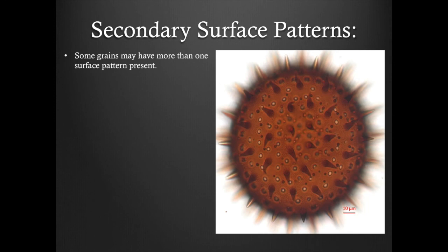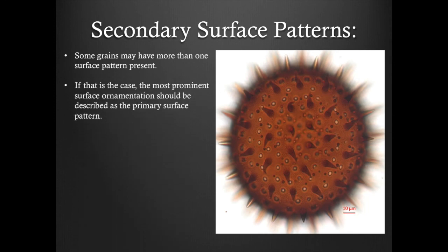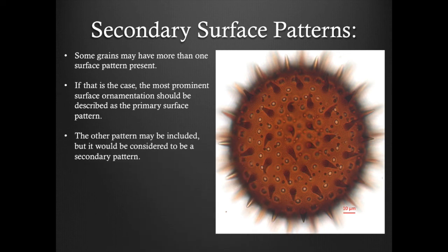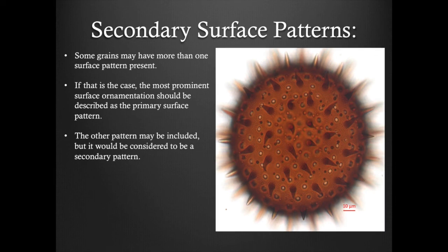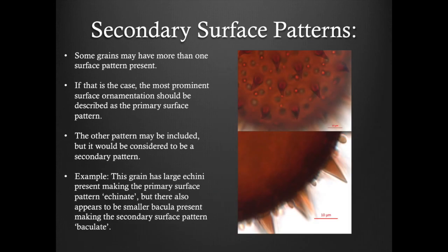Some grains may have more than one surface pattern present. If that is the case, the most prominent surface ornamentation should be described as the primary surface pattern. The other pattern may be included, but it would be considered to be a secondary pattern. Here is an example. This grain has large echinae present, making the primary surface pattern echinate. But there are also smaller bacula present, making the secondary pattern for this grain baculate.